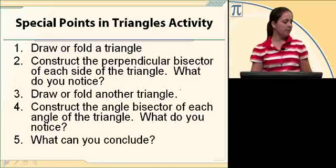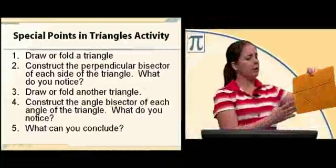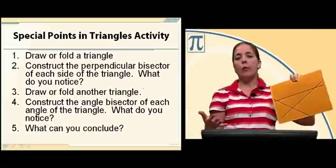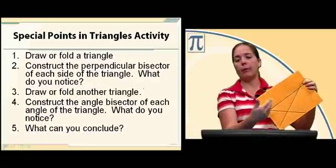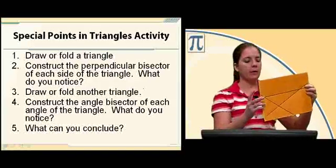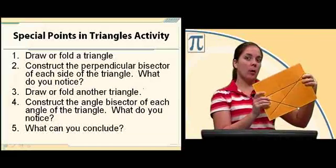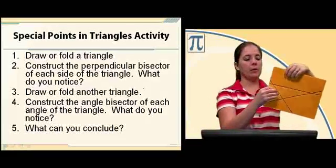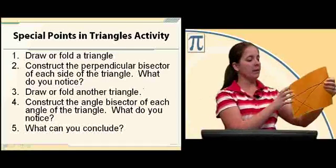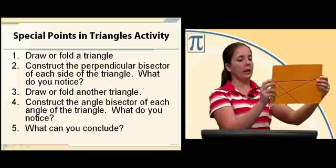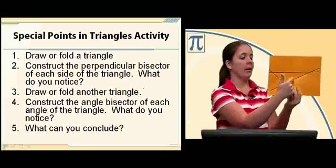So we're going to start with an activity. Take a piece of paper and we're going to draw or fold a triangle. I recommend folding — it makes it easier when we go through and do the perpendicular bisectors and angle bisectors. If you're going to draw it, use a dark marker or light colored paper so you can see the folds. I folded this triangle and outlined the sides so that you can see the triangle.